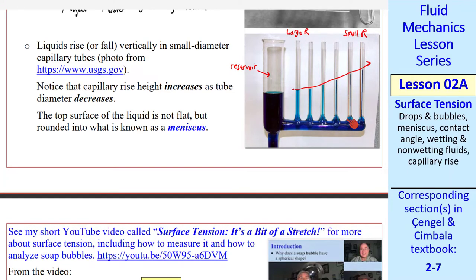If you zoom in on one of these tubes, you would find that the surface is not flat, but rather has a curve shape. This is called a meniscus.